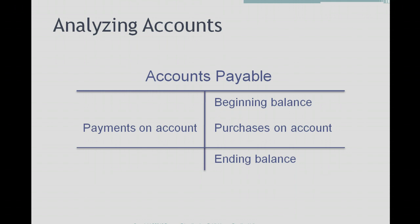Whenever we pay our vendors, which we call payments on account, that reduces our debt, and that goes on the debit side for this particular account. The ending balance reflects how much we owe our vendors at the end of the period. Sometimes your accounting questions will give you different information — for example, a beginning balance, how much was purchased on account, and an ending balance — and you should be able to calculate payments on account, because beginning balance plus purchases minus payments equals your ending balance. We need to be able to analyze accounts just by looking at T-accounts to come to a decision quickly.